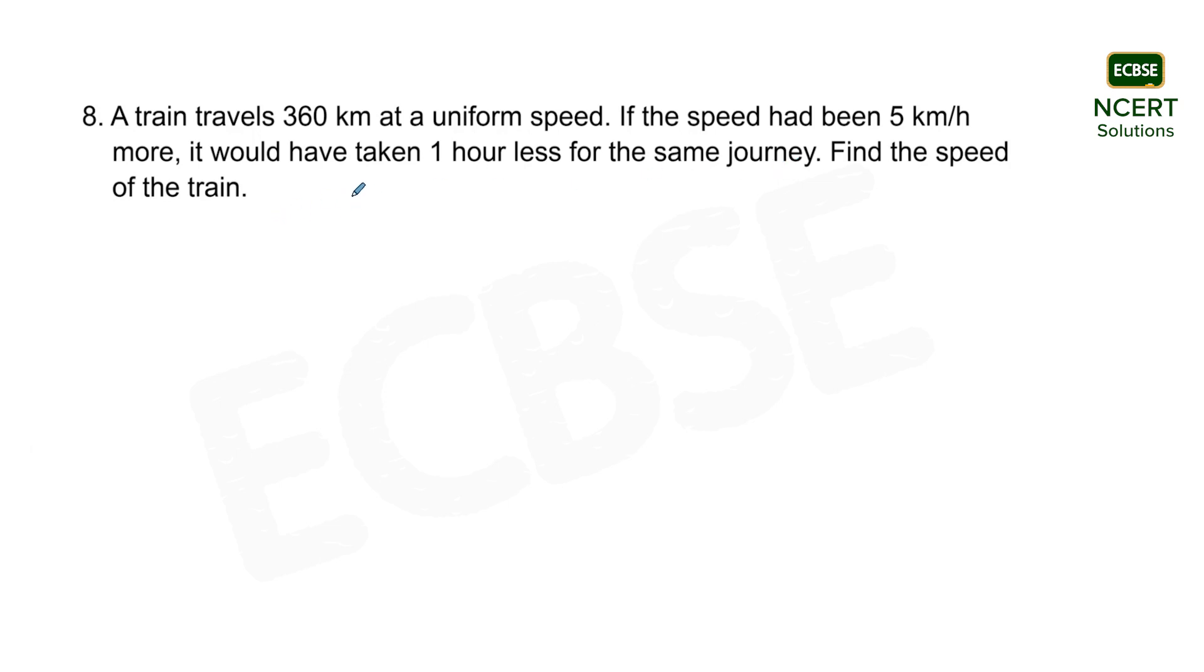So in order to find the speed of the train, let the speed be x km per hour. As it has not been given, we just assume a variable, say x in this case for the speed.